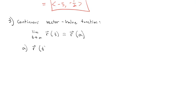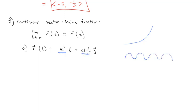For example, r(t) = e^t i + sin(t) j. We know e^t is continuous for all values — we never have to lift our pencil as we graph it. Similarly, sin(t) is continuous for all values — no gaps, no jumps, no vertical asymptotes — it's defined for all real numbers and the limit is also defined for all real numbers. So this vector-valued function is continuous for all real numbers.